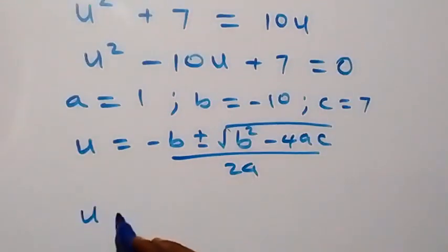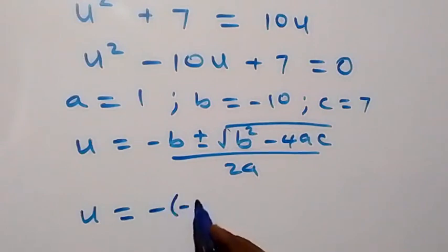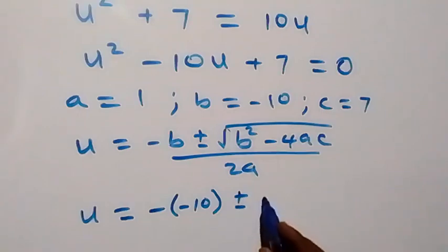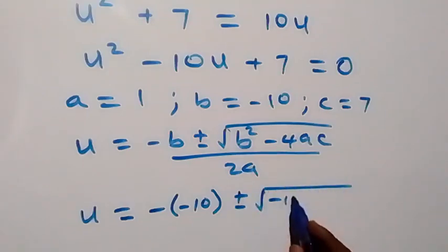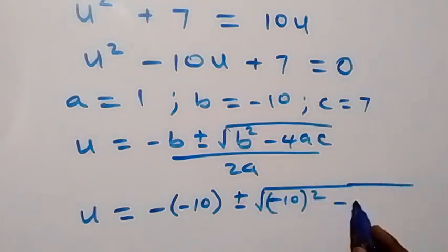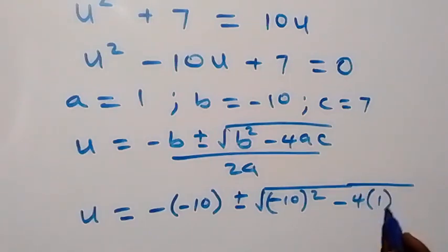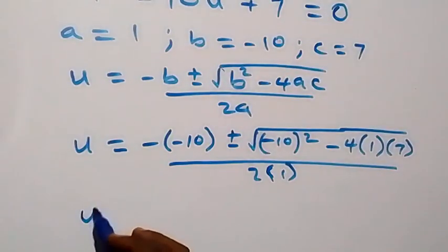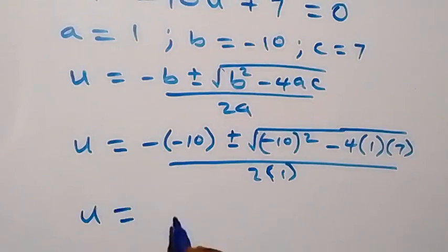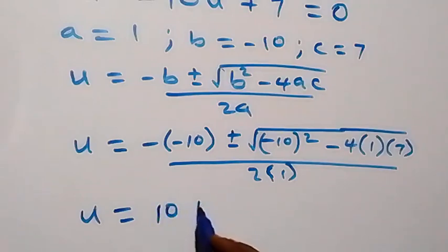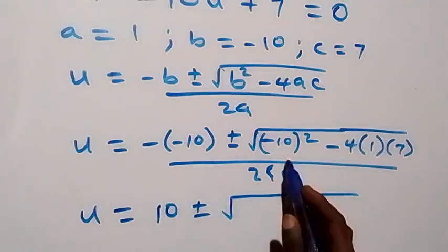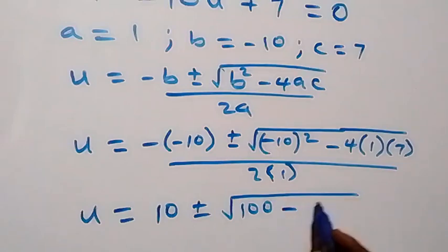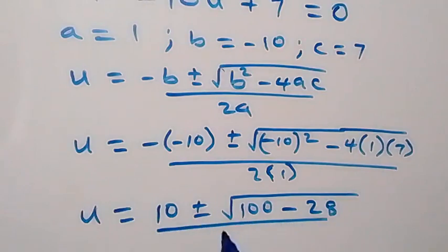Substituting in, we have u equals to minus minus 10 plus or minus square root of minus 10 squared minus 4 times 1 times 7, over 2 times 1. Simplifying further, that becomes u equals to 10 plus or minus square root of 100 minus 28, over 2.